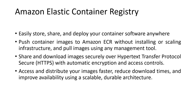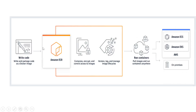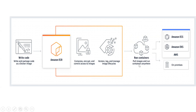Inside ECR we'll be creating repositories. The workflow is: you write the code, you package the code as a Docker image, then you push it to Amazon ECR, which provides compressed, encrypted, and access-controlled storage for the images. You can also apply version tags — putting a tag is very important — and manage image lifecycles. Today we'll focus on how to push your Docker image to ECR and what things are available there.